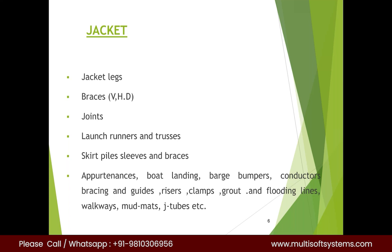Clamps are used to keep risers in position. Grout is your basic civil grout — a mixture of cement, sand, and water. Flooding lines are used for T&I operations when you need to control the buoyancy of the jacket. Walkways are used for movement within the platform, and bridges connect two platforms. J-tubes are similar to risers, but instead of fluid they carry cables or umbilicals — electric power lines, valve control lines, and umbilical connections.